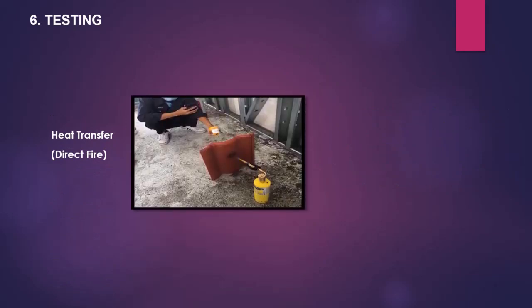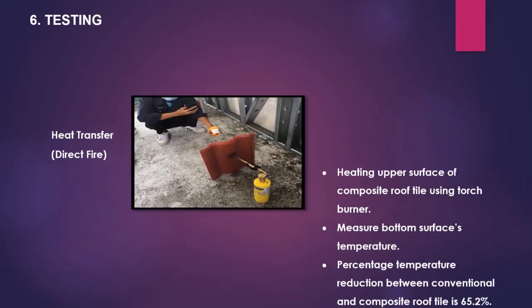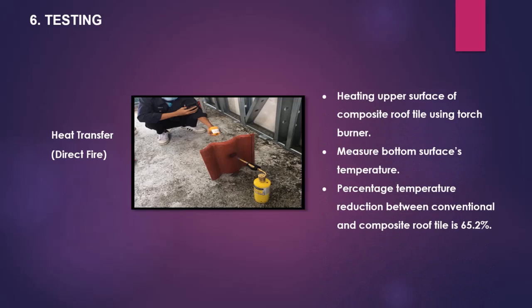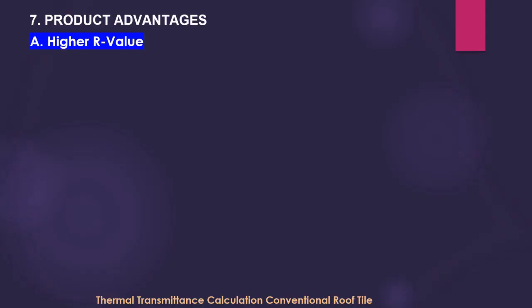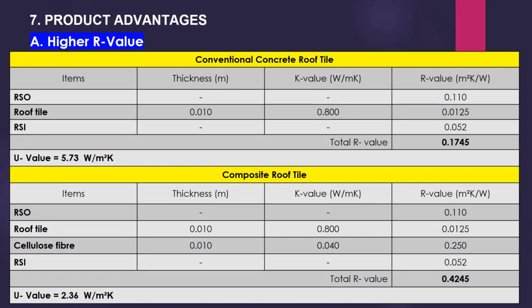The third test is heat transfer by direct fire. The upper surface of the composite roof tile was heated using a torch burner, and the temperature was measured at the bottom surface. The percentage temperature reduction between the conventional and composite roof tile is about 65.2 percent.